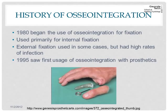Beginning in the 1980s, we saw osseointegration used for fixation — where a broken bone is fixated together by screws or plates, the bones heal, and then you have the option of removing the implant or keeping it in. It was primarily used for internal fixation, where all the screws and plates were contained within the body. External fixation was rare and had high rates of infection.